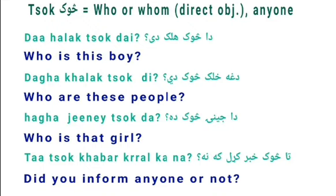Let's begin with the first one, which is 'Tuk', meaning 'who', 'whom' as a direct object, or 'anyone'. For example: 'Da Halak Tuk Dai' means 'Who is this boy?' — 'Halak' is boy, 'Tuk' is who, 'Dai' is is. The question word Tuk, as explained in the previous video, stands in front of the verb. And we use 'Dai' because Halak is male singular.